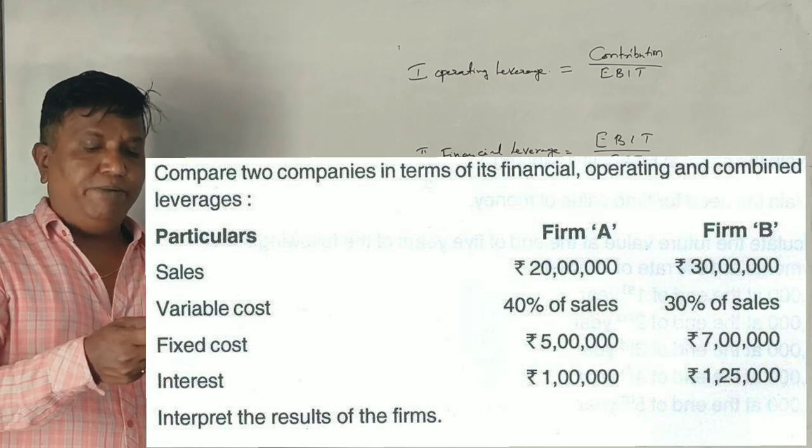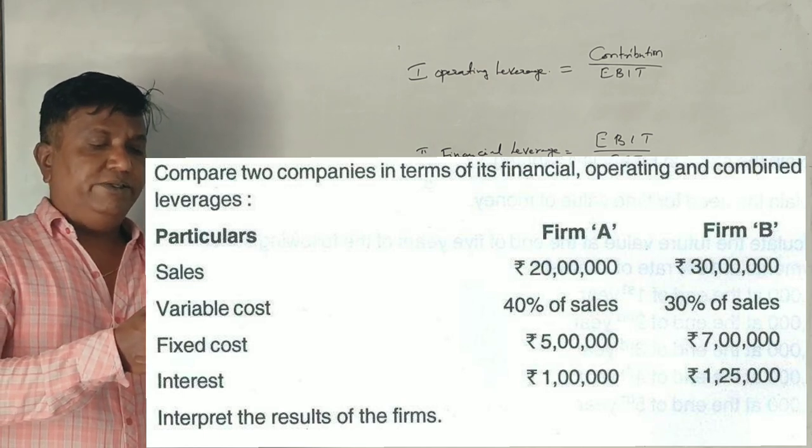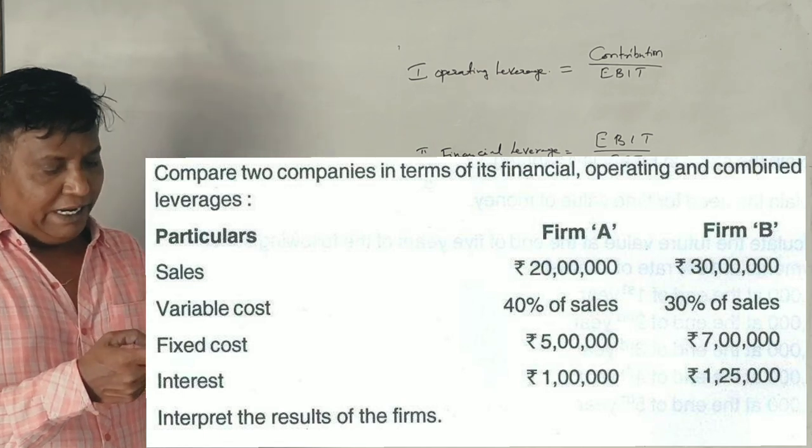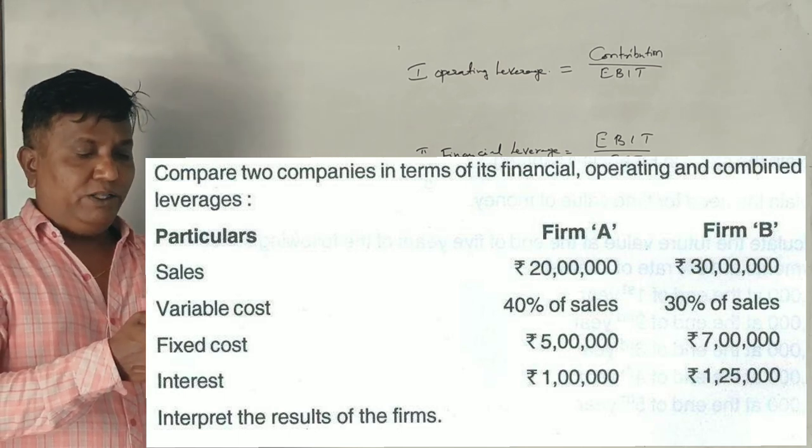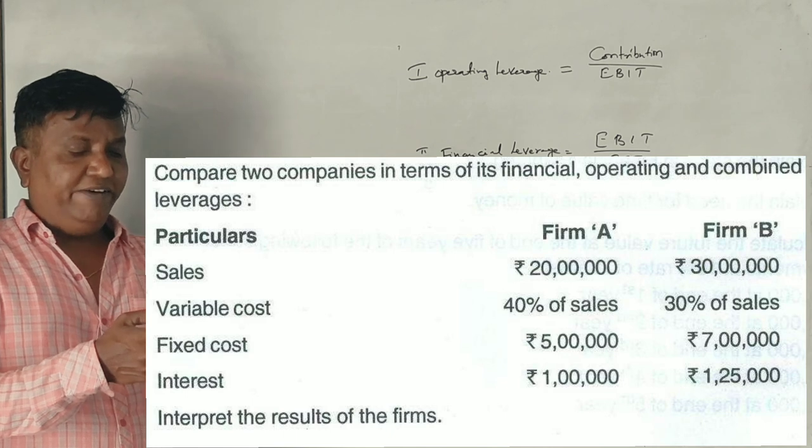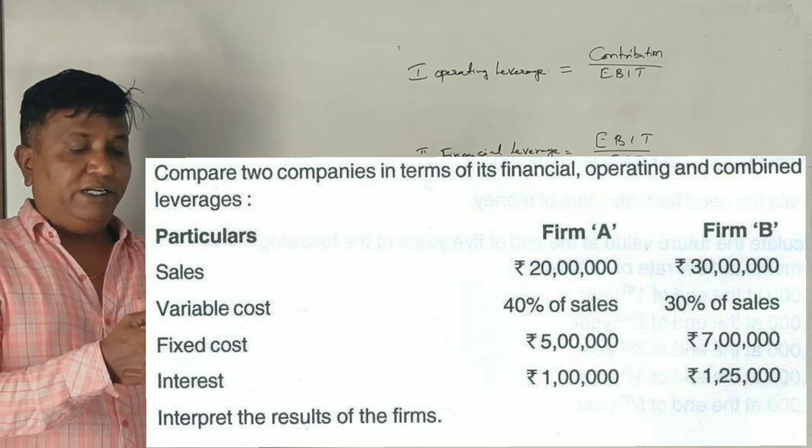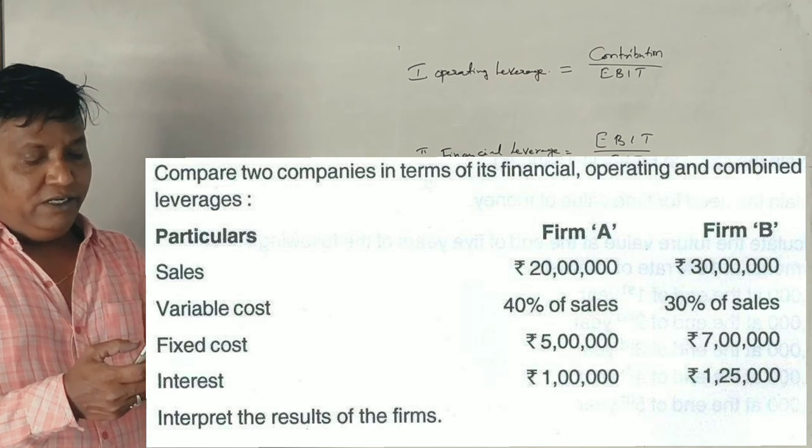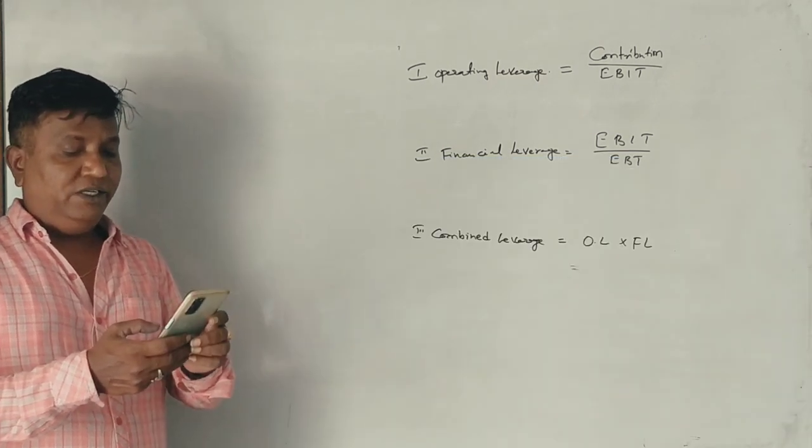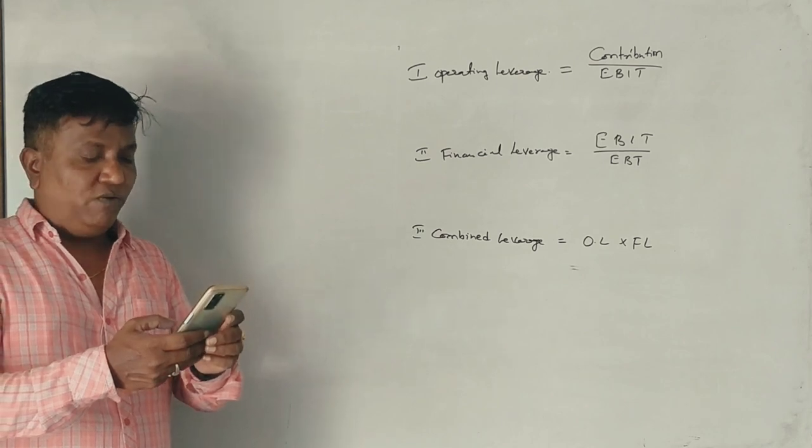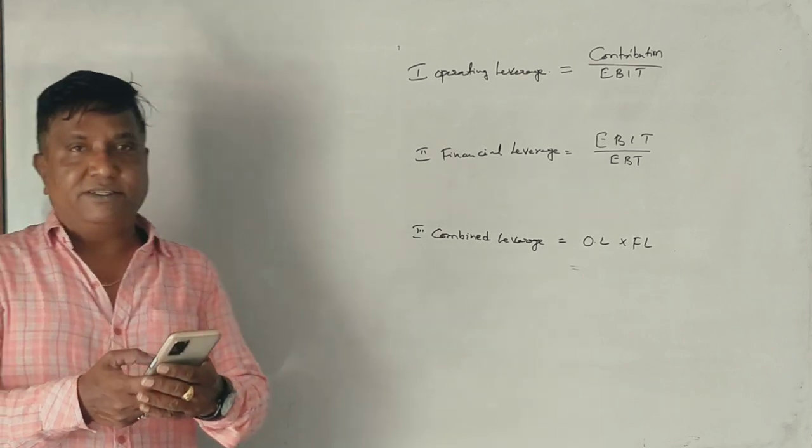Compare two companies in terms of financial, operating and combined leverages. Firm A and Firm B: Sales 20 lakhs and 30 lakhs. Variable cost 40% of sales and 30% of sales. Fixed cost is 5 lakhs and 7 lakhs. Interest is 1 lakh and 1 lakh 25,000. Interpret the results.